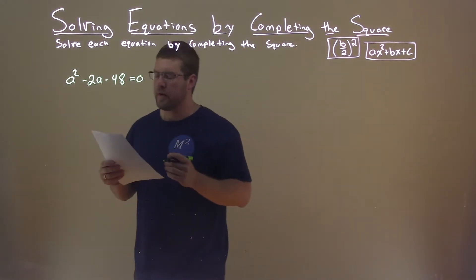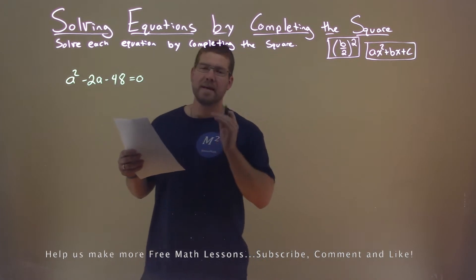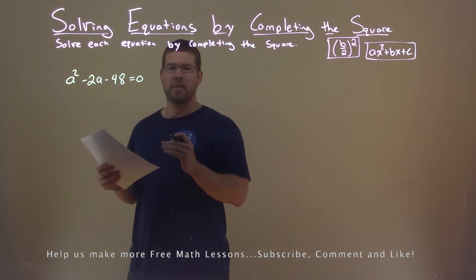We're given this problem right here, a squared minus 2a minus 48 equals 0, and we want to solve this by completing the square.